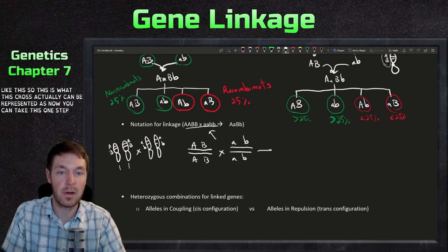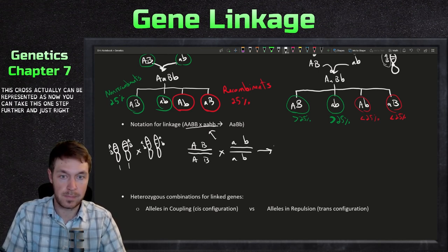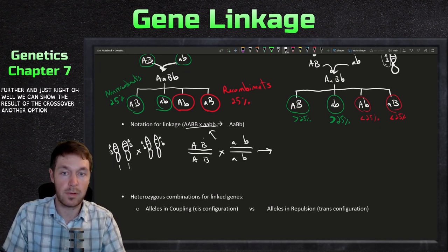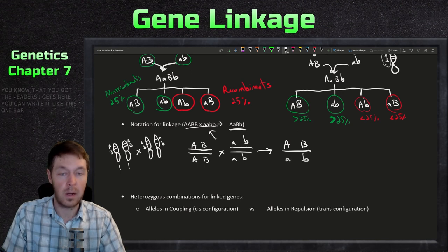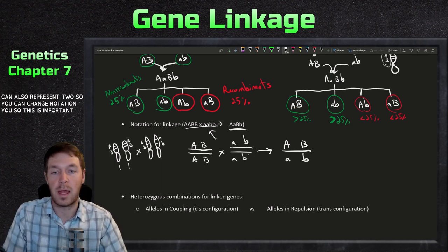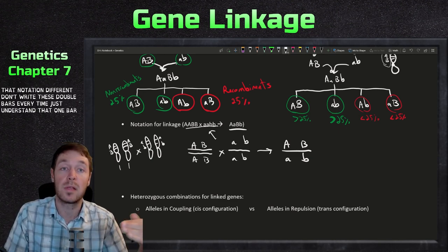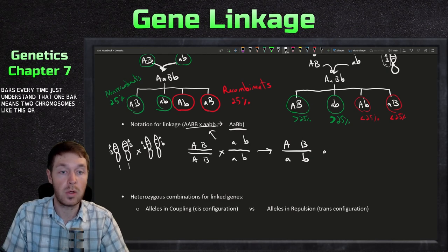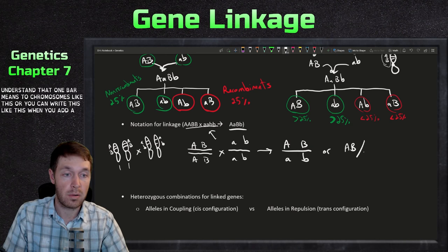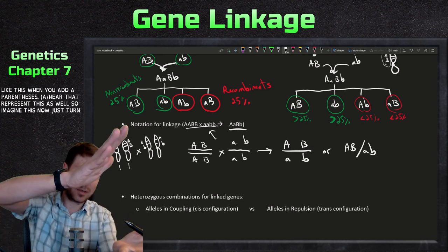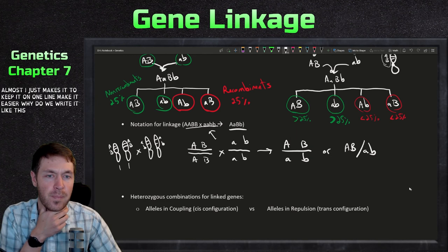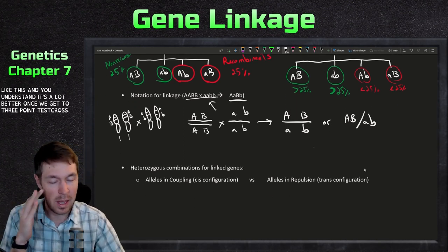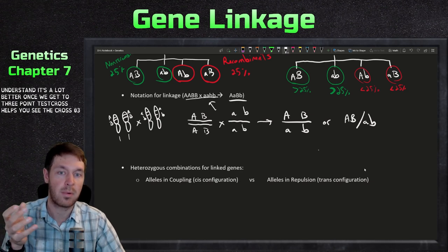You can take the notation one step further. For the heterozygous result of the cross, one bar can represent two chromosomes - so you can simplify the notation. You can also write it with a slash, which represents the two chromosomes on one line to make it easier. You'll understand this notation much better once we get to the three-point test cross, where it really helps you visualize the cross.